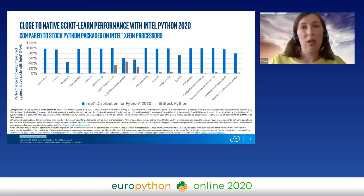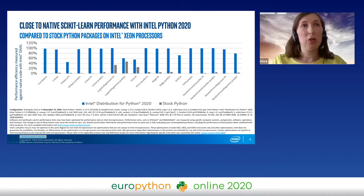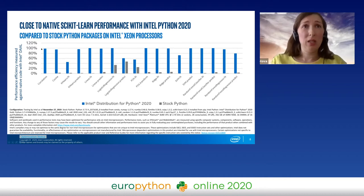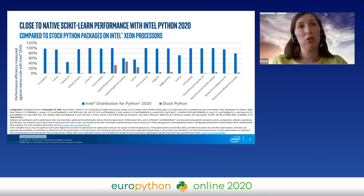All this leads to great performance. Here you can see a comparison of stock scikit-learn performance to Intel scikit-learn performance, both compared to native code performance — where 100% is the performance of C++ DAL algorithms. Intel Python performance, shown as blue bars, almost everywhere is greater than 80%, whereas stock scikit-learn installed from pip rarely reaches 5% of native code performance.